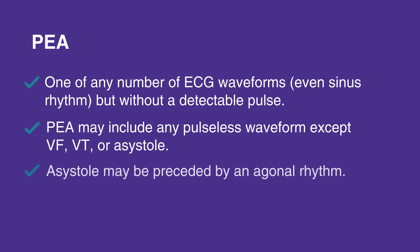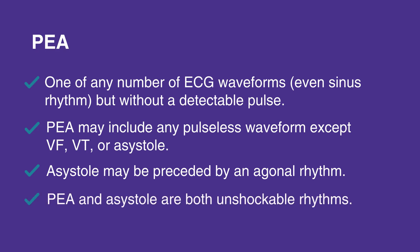Asystole may be preceded by an agonal rhythm. An agonal rhythm is a waveform that is roughly similar to a normal waveform but occurs intermittently, slowly, and without a pulse. PEA and asystole are both unshockable rhythms.